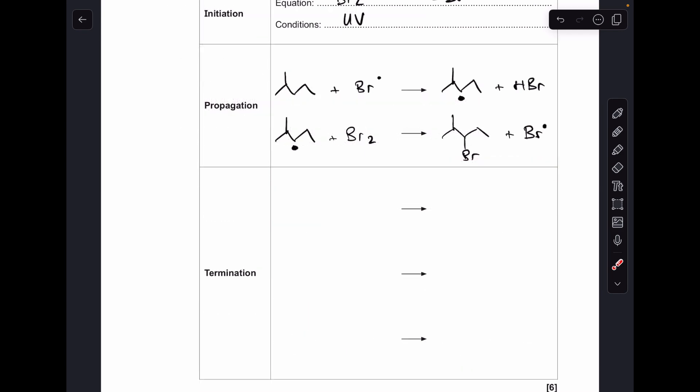And then for the three termination steps, we're basically just going to take any of the radicals, any two of the radicals, and put them together. So the easiest one to start with is two bromine radicals becoming a Br2 molecule. Next one is that one there. And then the final one is we're going to take two of these organic radicals and we're going to join them together, but they're going to join at carbon 3, which is going to make this lovely looking thing here.